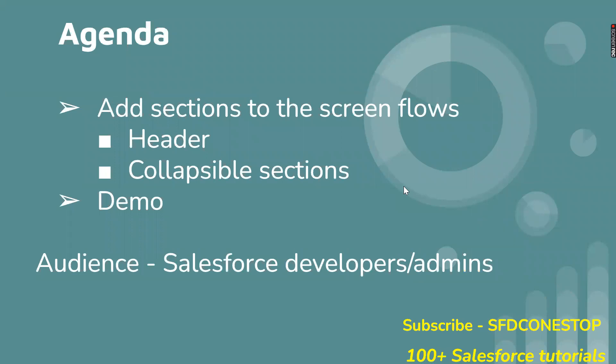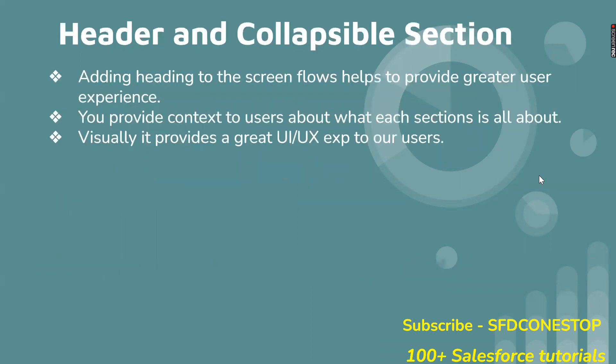Here is the agenda for today's session. We are going to make use of the already existing screen flow that we have created in our previous video sessions, wherein we have leveraged the sections component. Now we will see how you can add a header and make that section collapsible in our demo. Having a description or a heading will make the user experience better. When you add a heading or description to the section, it will provide some context to our users — like what that section is all about.